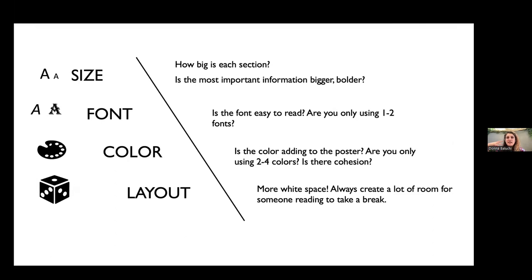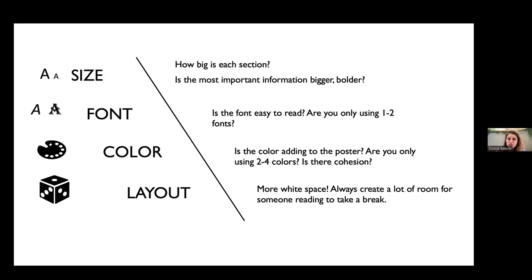Think about whether the most important things are bigger and bolder. For fonts, try to stick to only one or two on your research poster and make sure they're easy to read — unless you're doing research on Halloween, avoid chiller fonts. For color, use only two to four colors and make sure there's cohesion — colors should make sense together. For University of Utah posters, people typically use white, black, and the U red, sometimes adding a muted pink-red. And always, always include more white space — give someone reading your poster a break.